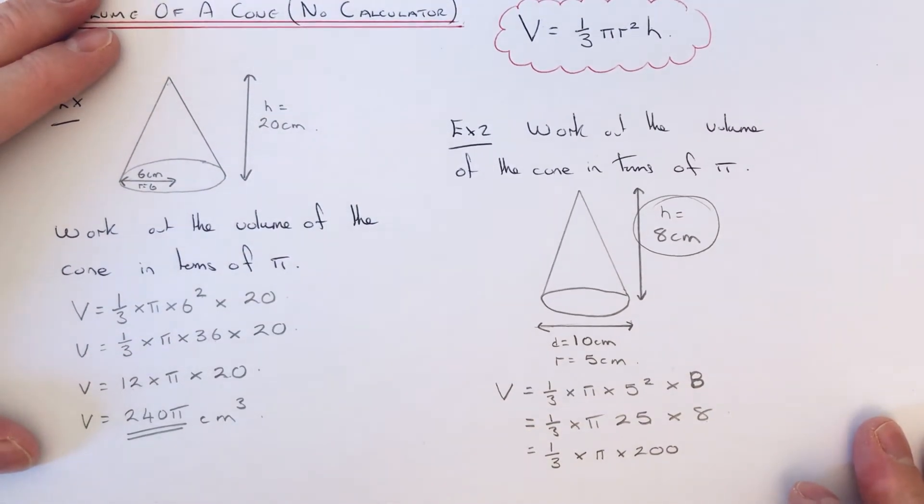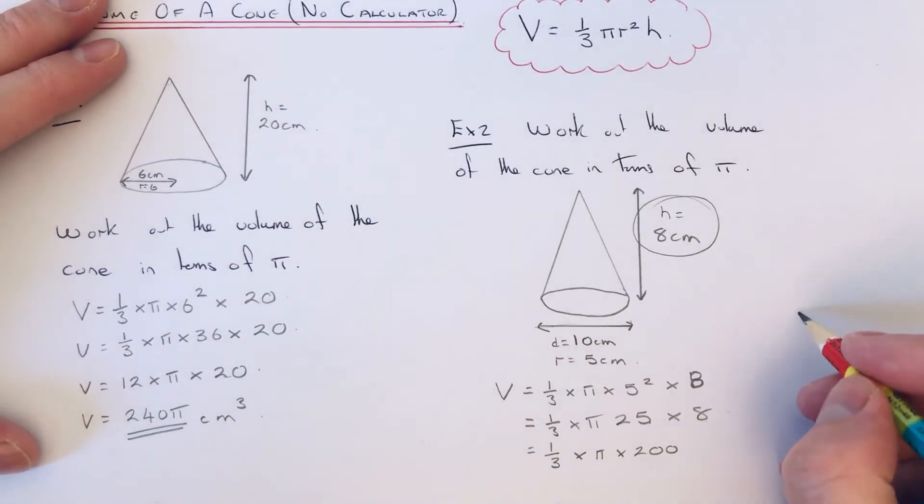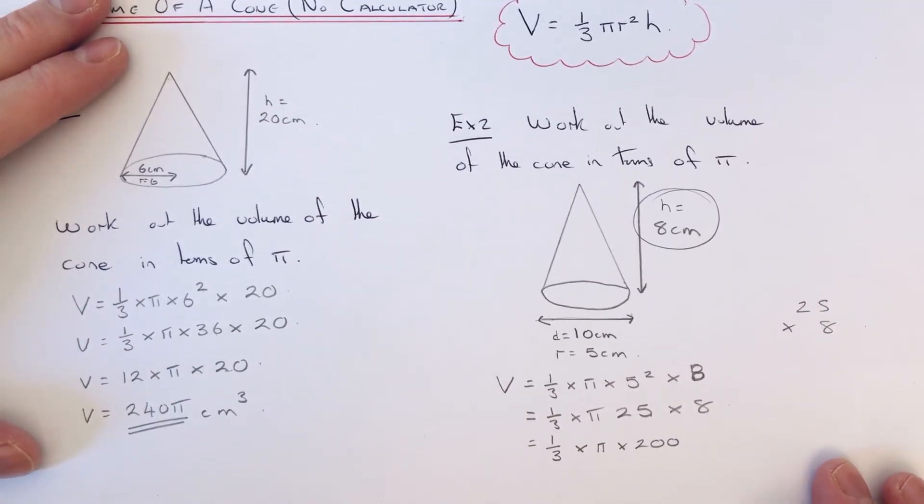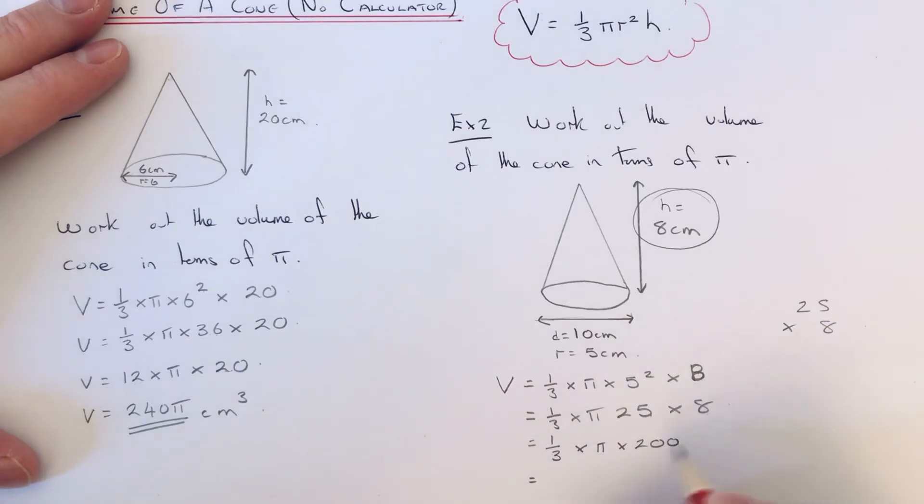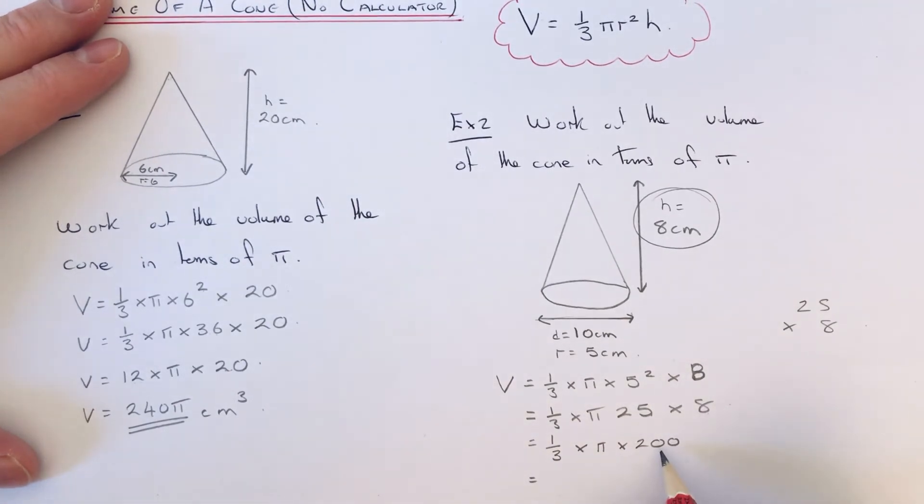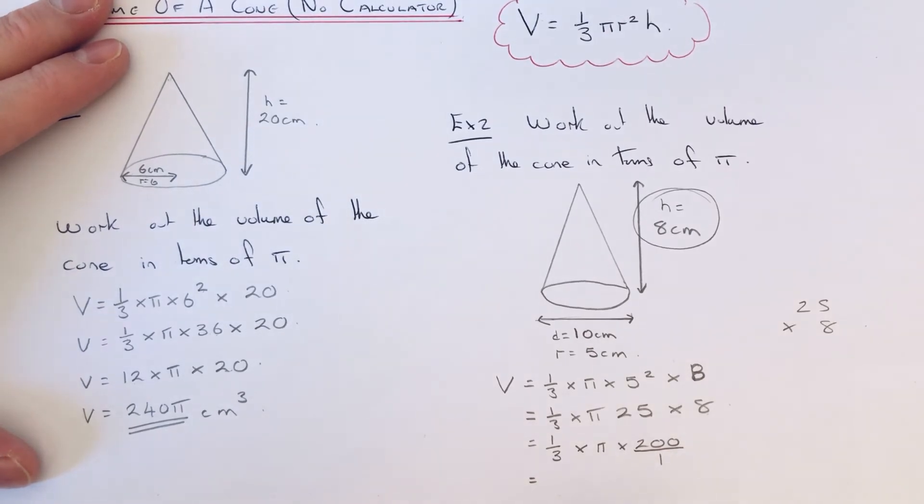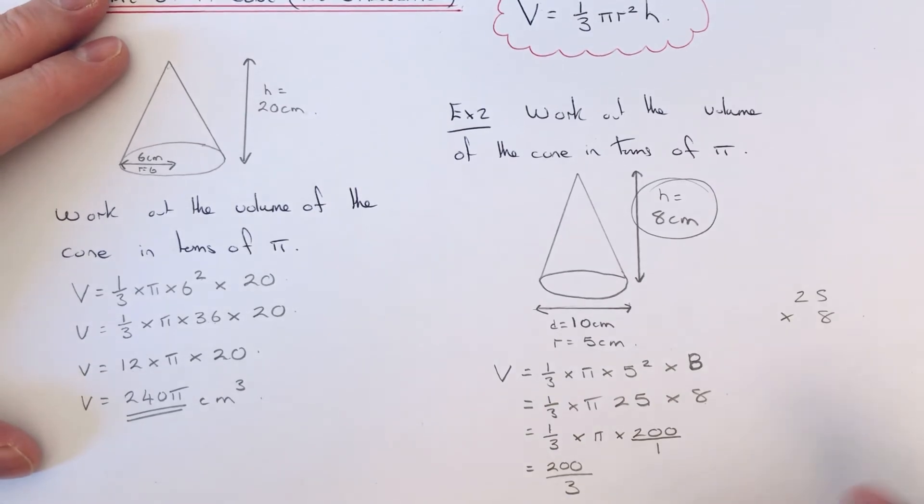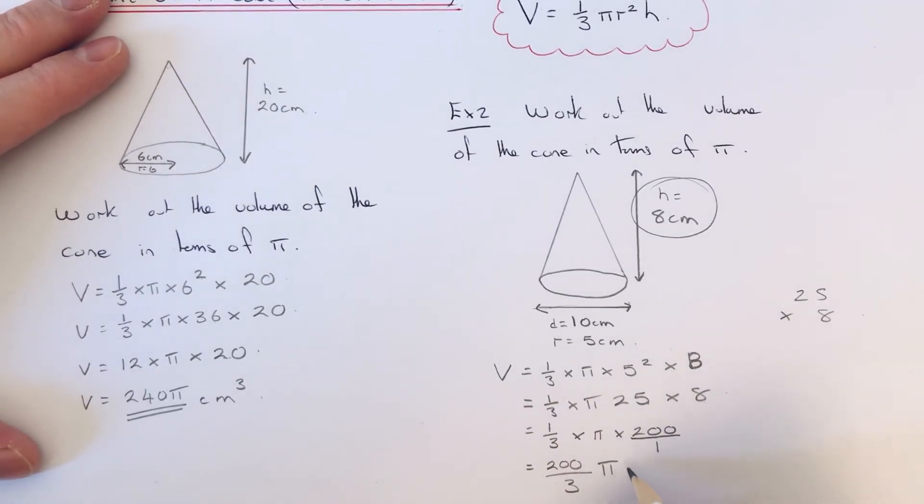If you can't work that in your head, just do it on the side of your page in columns like 25 times 8. So we now need to multiply one third by 200. 200 doesn't divide by 3, so I'm just going to write 200 as a fraction by writing 200 over 1. If we do 1 times 200 on the top, which is 200, and 3 times 1, which is 3, we can leave it as 200 over 3 and then just put the pi on the end.